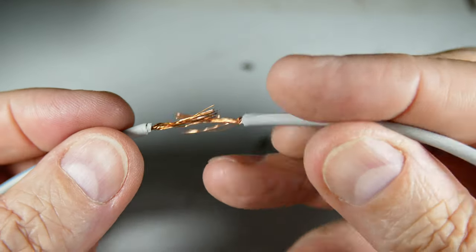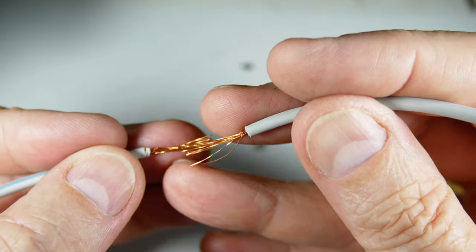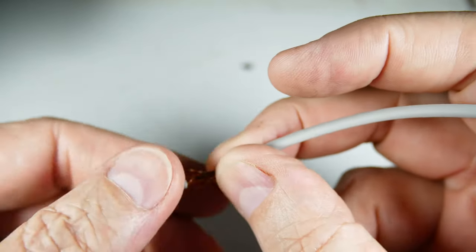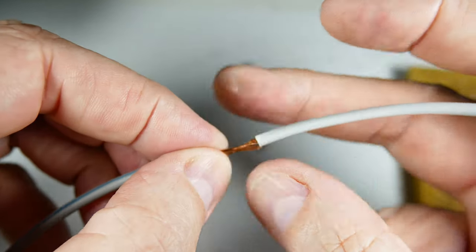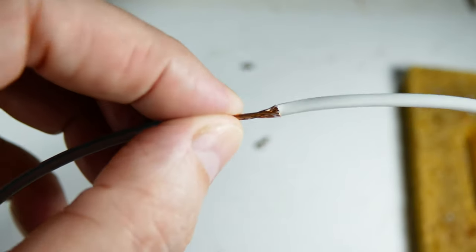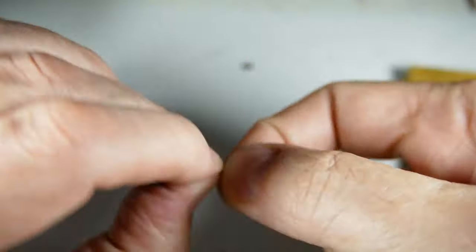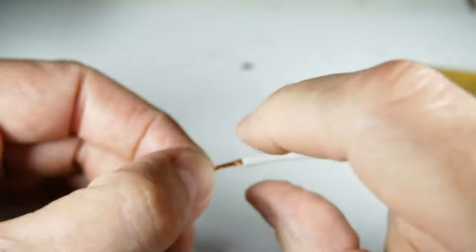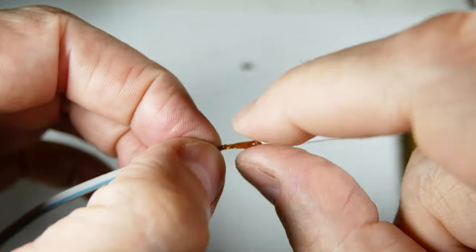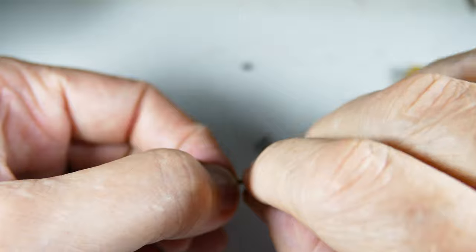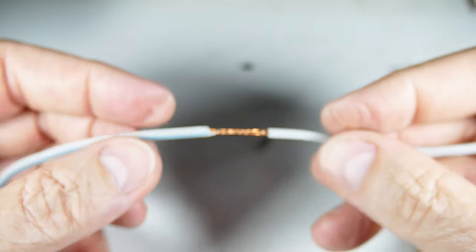All good soldered connections begin with a good mechanical connection. In this case, we're just going to kind of intertwine these wires, make sure you can see that. And then we're just going to twist them. Now on heavy duty wire, this is not easy to do, but with a finer wire, it's not too bad.